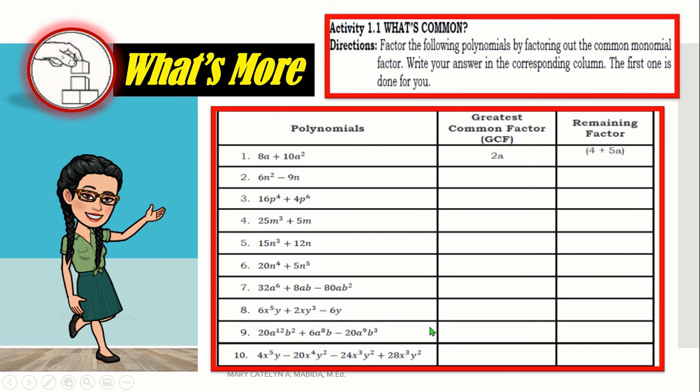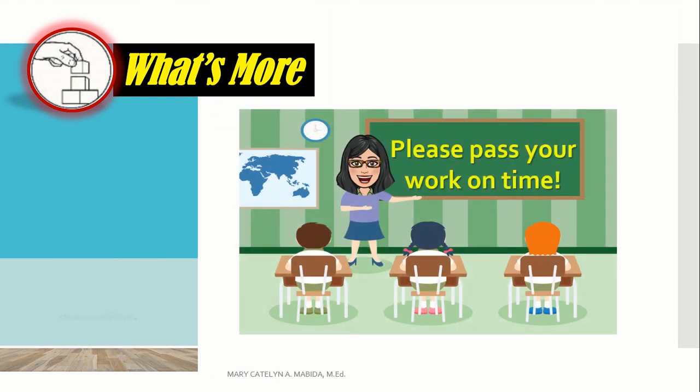We have here polynomials, 10 polynomials, then we identify the greatest common factor or the GCF. In this example, the GCF is 2a. And then, we write on the last column the remaining factor which is 4 plus 5a. And there you go. You can do it. Again, you can pause and replay the video as needed. And please pass your work on time. Give me a thumbs up. Good job!